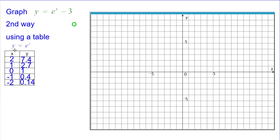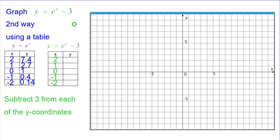Second way, using a table, we'll use this table as our 5 points that we normally would have in y equals e to the x. Again, we'll subtract 3 from each of the y coordinates.